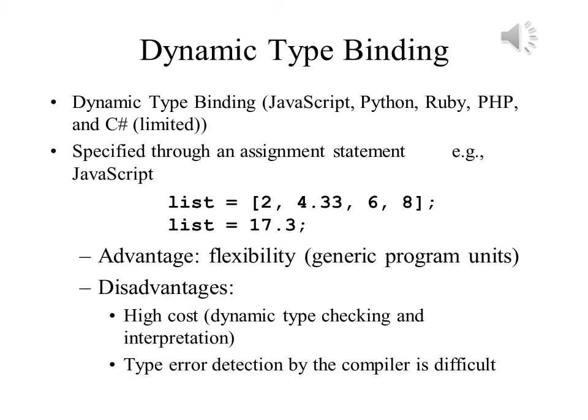Dynamic type binding appears in several modern programming languages, including JavaScript, Python, Ruby, and PHP. We specify the type of a variable through an assignment statement — the variable takes on the type of the value assigned to it. In the example shown, a JavaScript variable can be set as a real value or as an array, giving programs great flexibility. But it comes at a high price: dynamic type checking slows down execution, and because dynamic type binding makes it difficult to write a compiler as opposed to an interpreter, the use of interpreters slows down execution as well. Lastly, it also makes it more difficult to find type-related errors.